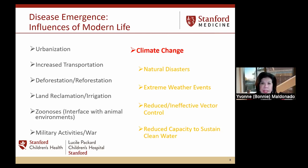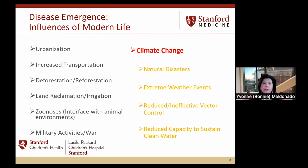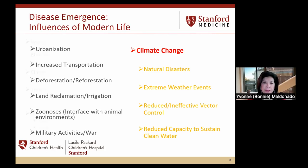If we look at climate change, just the number of facets of climate change can force opportunities for pathogens to come into contact with human populations. Those include natural disasters, extreme weather events, reduced and ineffective vector control, and reduced capacity to sustain clean water. From the infectious disease standpoint, these actually do contribute to our exposure to new diseases, as we've seen in the last three years.